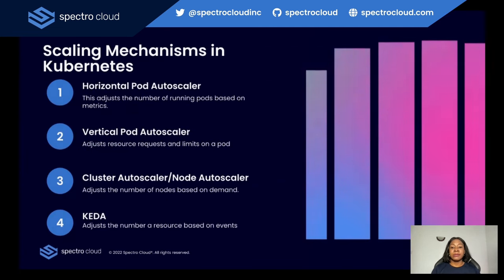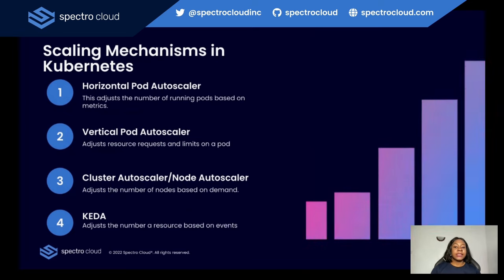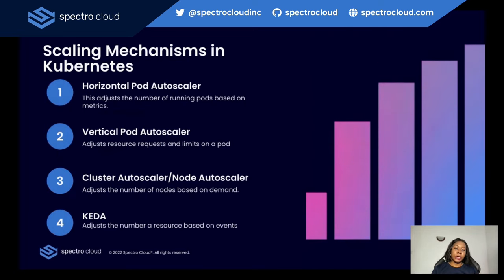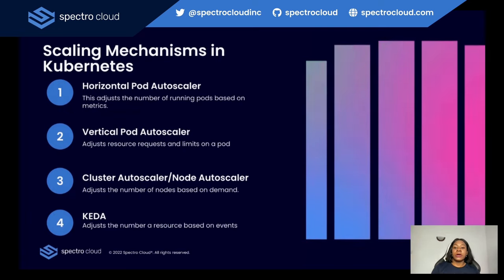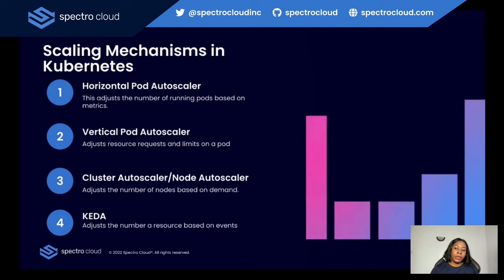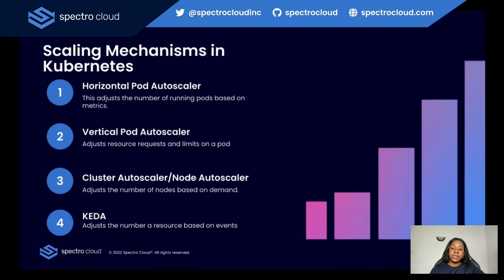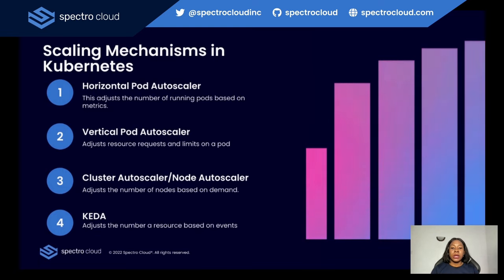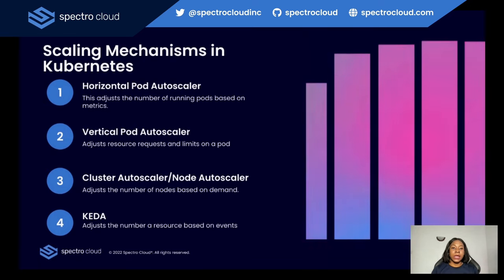So what are the various scaling mechanisms available in Kubernetes? We have HPA, which is the Horizontal Pod Autoscaler — a foundational autoscaling mechanism that automatically adjusts the number of running pods based on metrics such as CPU or memory utilization. VPA, on the other hand, is a complementary approach to HPA that adjusts the resource requests and limits on a pod. There's also CA, the Cluster Autoscaler or Node Autoscaler, which adds or removes nodes from a cluster based on demand. We also have KEDA, which adjusts the number of resources based on events. We're going to go into all of these in detail.